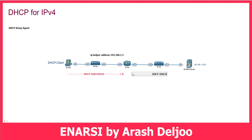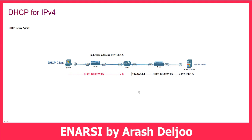This new DHCP Discovery uses a unicast destination IP — not broadcast. The destination IP is 192.168.15 because we configured this on the eth0 interface, and the source IP is the IP of eth0, for example 192.168.1.1.